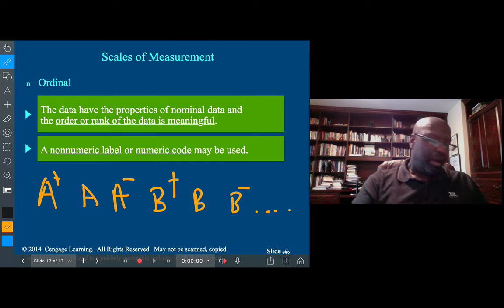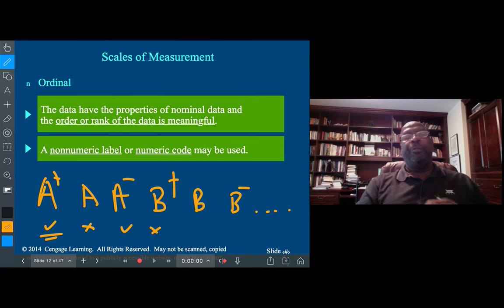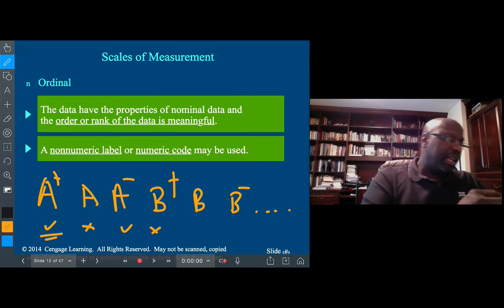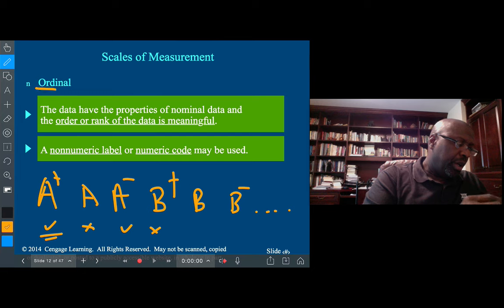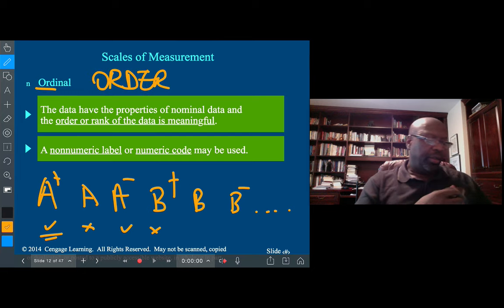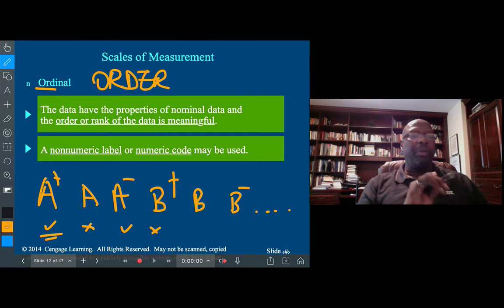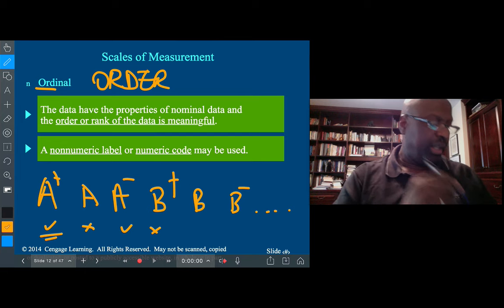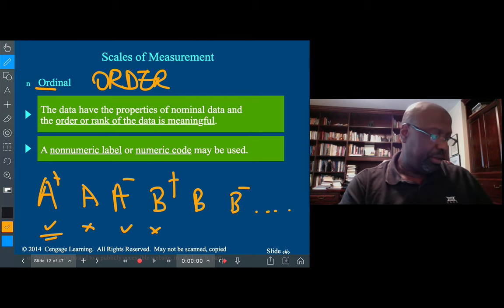Ordinal data is a little different. It has categorical labels, but there is a relationship or hierarchy between them. For example, grades - you could get an A+ in a course, A, A-, B+, B, B-, and so on. These are all categories, but A+ is better than A, and A- is better than B+. There is a hierarchy. If you're not sure, think of order - the data helps us put it in some kind of order.